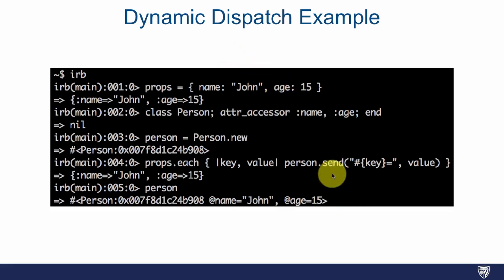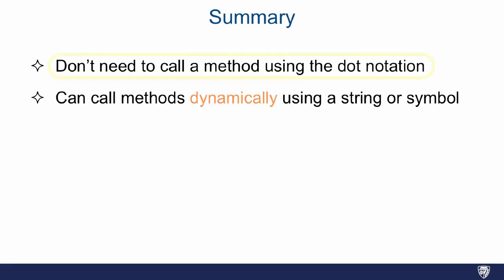So in summary, you don't need to call methods using the dot notation. You can call methods dynamically using a string or a symbol, and that is what dynamic dispatch is. Next we'll talk about this idea of dynamic methods in addition to dynamic dispatch.